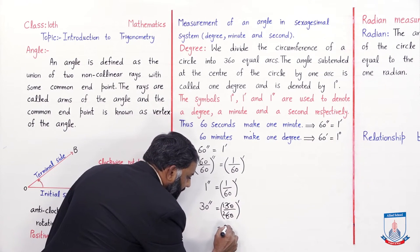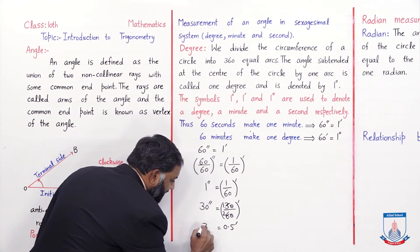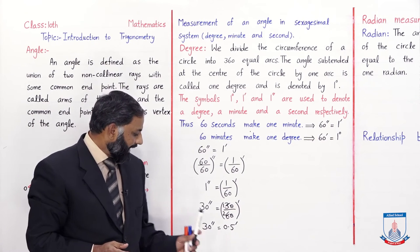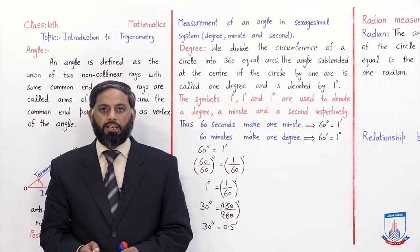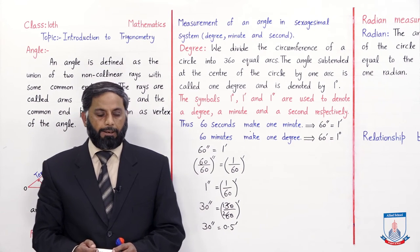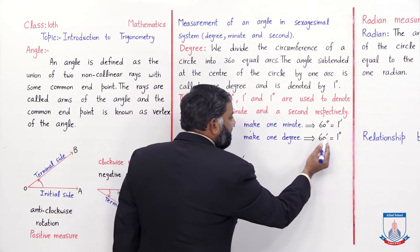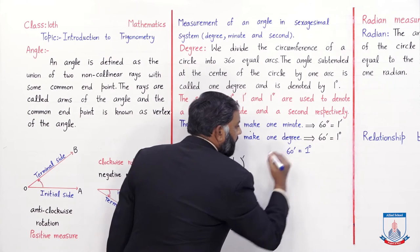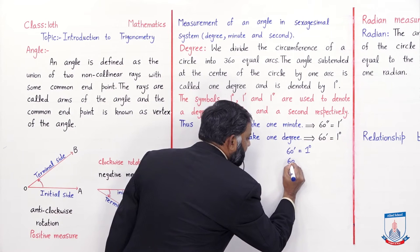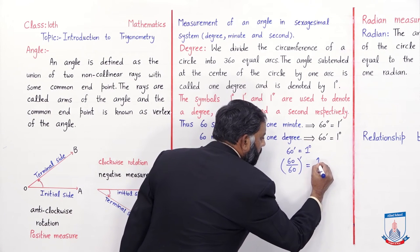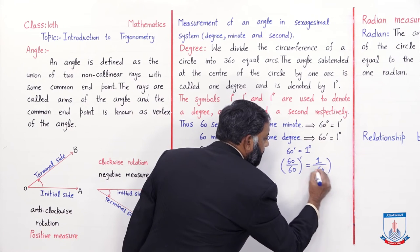So 30 over 60 simplifies to 1/2 minutes, which equals 0.5 minutes. Students, 30 seconds equals 0.5 minutes. So to convert seconds to minutes, divide by 60. To convert minutes to seconds, multiply by 60. Remember: 60 minutes make 1 degree. To convert minutes to degrees, divide by 60 — so 60 minutes divided by 60 equals 1/60 degree.